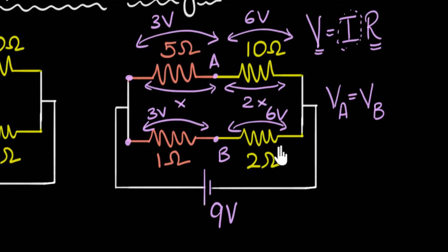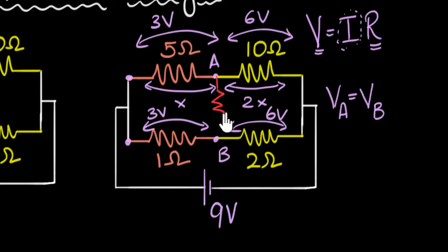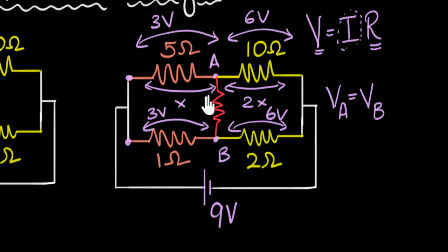The voltage at point A must exactly equal the voltage at point B — that's the consequence of having the same ratios of resistance. Now notice: because the voltages are exactly the same at these two points, if we put a resistor or even a capacitor in between — it doesn't matter what you put in between — the voltage across it is the same. Therefore the potential difference is zero. There is no difference in voltage, no potential difference.